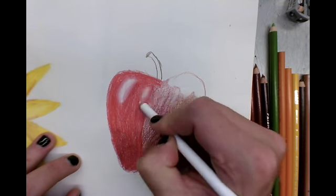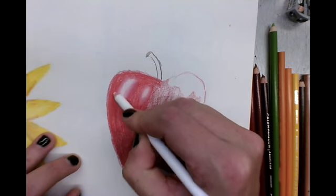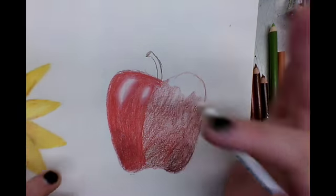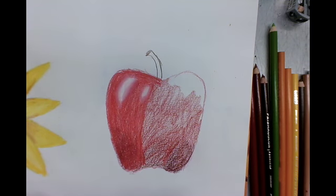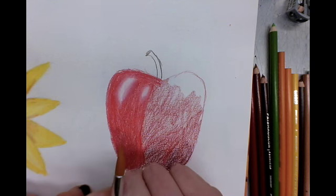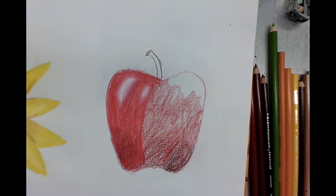It will lighten up whatever color is underneath it but it will also kind of blend nicely. So that's one way you could do it. But let's say you accidentally forgot to leave a highlight and so you just wanted to add a highlight to an area that was already fully colored in. There's two options.